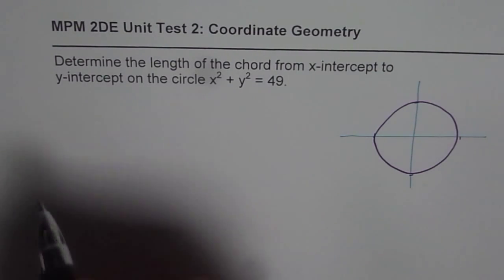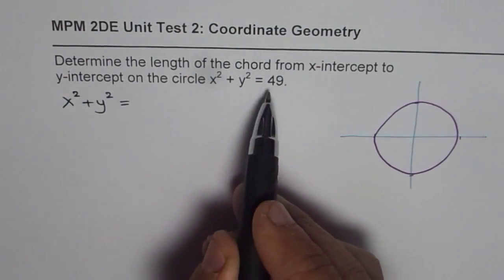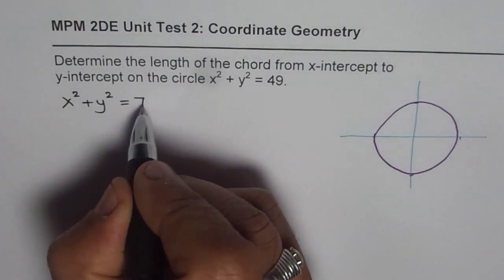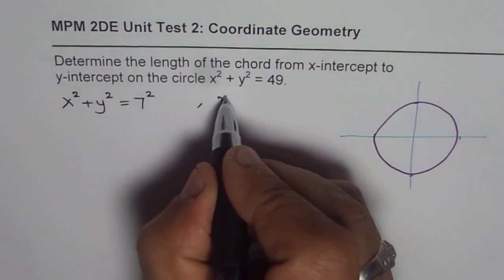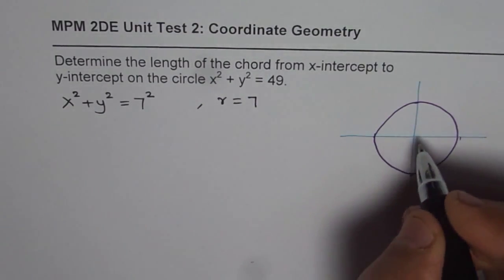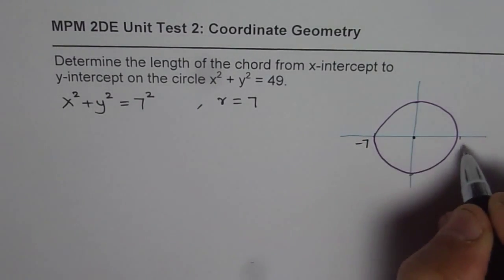The equation of the circle is given to us as x² + y² = 49 which I can write as 7². So that clearly shows that radius of the circle is 7. So that means from center all these points will be 7 units away.